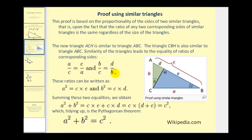Remember when you have a proportion, the cross products must be equal. So we'd have A squared equals C times E, as we see here. And we'd also have B squared equals C times D, as we see here.